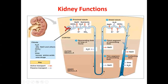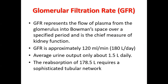The filtrate passes from the glomerular capillaries into the Bowman's capsule — this process is called glomerular filtration. The glomerular filtration rate (GFR) is about 120 to 125 mL per minute, which corresponds to approximately 180 liters of filtration by the nephrons each day, while urine output is only about 1.5 liters per day.